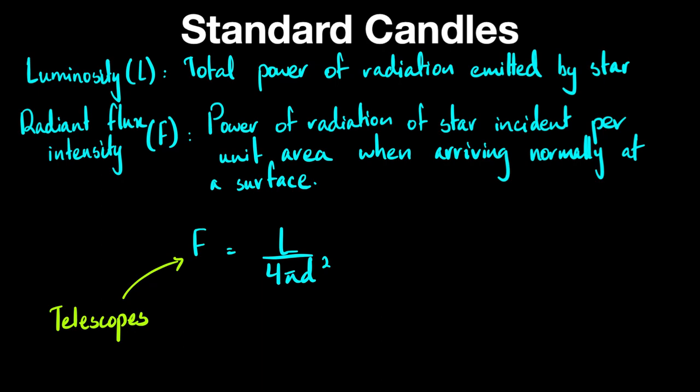What astronomers have been doing for the last 100 years is perfecting how well a telescope can measure the intensity, the brightness of a star. This is how we get F. How we get the distances is that if we know the luminosity of a star, we can calculate this easily by making d the subject of this equation. But the real question is: how do we get the luminosity of a star?